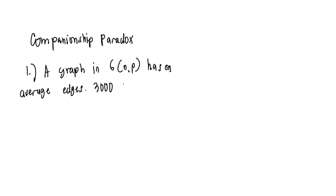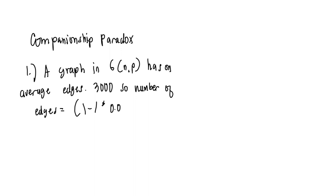So we have 3,000 — we have the number of edges equal to times 0.001, which equals 4,499. So our answer would be 4,499 edges.